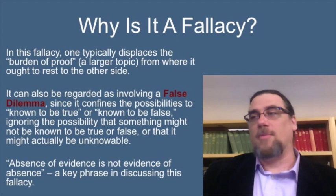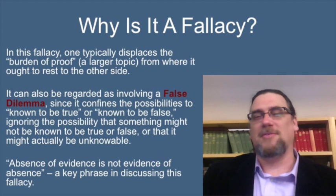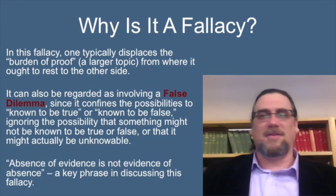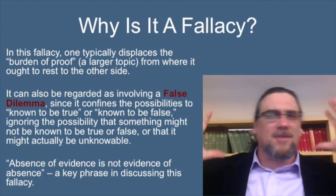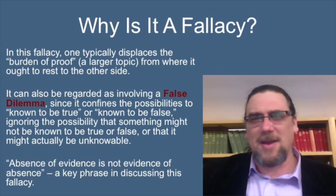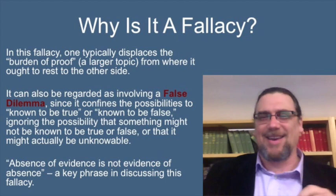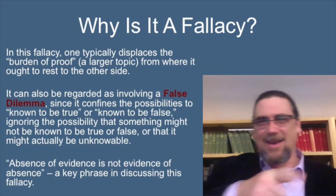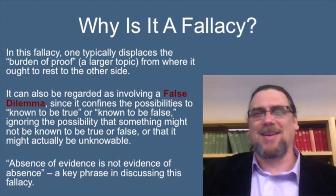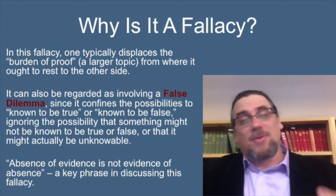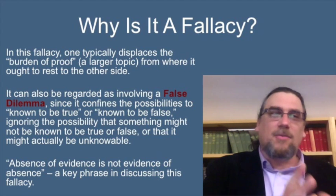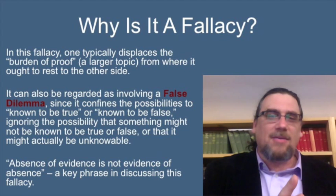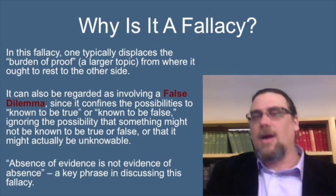There's a catchphrase that's useful when somebody makes this fallacy: absence of evidence is not evidence of absence. Make sure you get it right in your head so you don't reverse it, because when you play with this chiastic structure — where there's an X sort of pattern — you can end up saying something quite different. Not having evidence for something being the case is not evidence of absence.